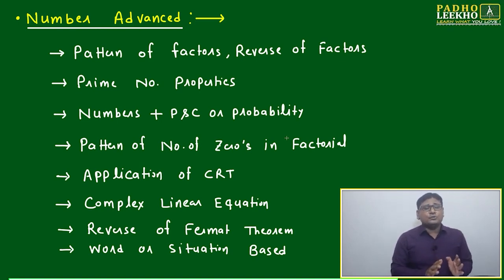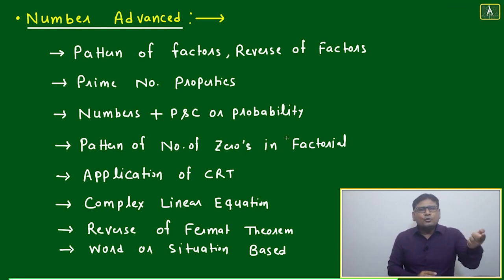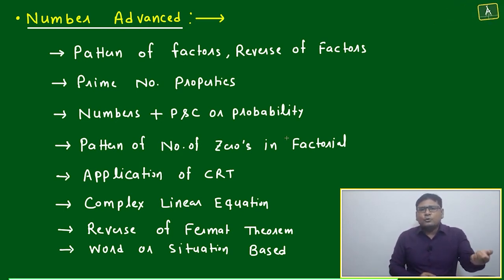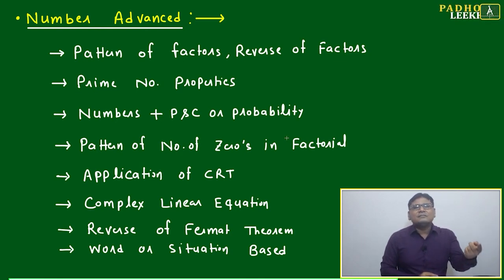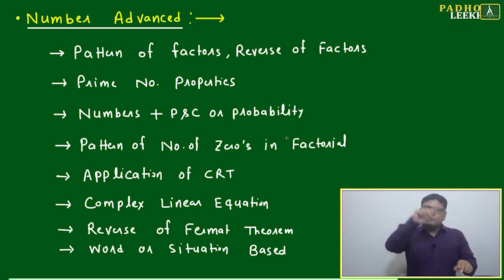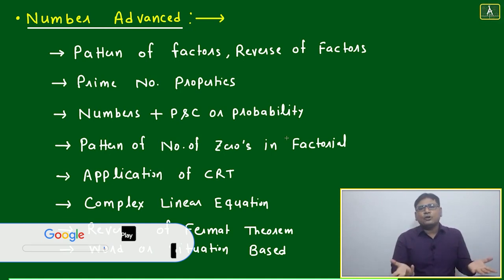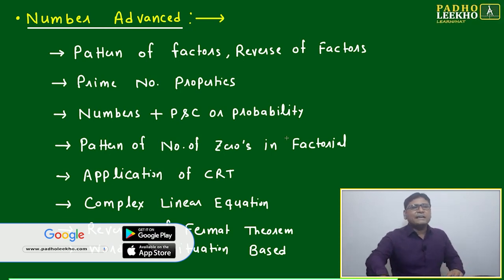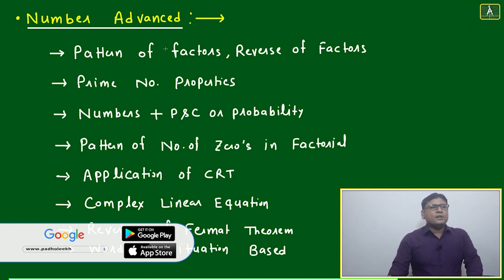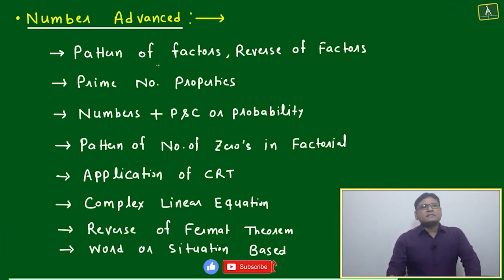But one thing is sure: if you understand this level, then the CAT paper, JAC paper, or whatever exam you are appearing for will become much easier. I am able to apply all shortcuts with great confidence because I know number advance — I know this loop can go in this way and cannot go the wrong way. Understanding number advance even a little will be much, much helpful.